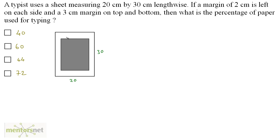This shaded area is the printing area. We have left some margins on the left and right. A margin of 2 cm is left on each side — 2 cm on the left and 2 cm on the right. So the length of the printing area will be 20 minus 4, and that's 16.